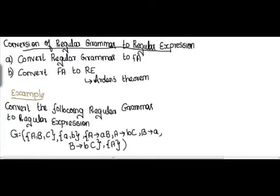The question is written here: convert the following regular grammar to regular expression. These are the different parts of the grammar — this is the set of non-terminals, this is the set of terminals, these are the production rules, and this is the start symbol. Let's start converting the regular grammar to regular expression for this example.